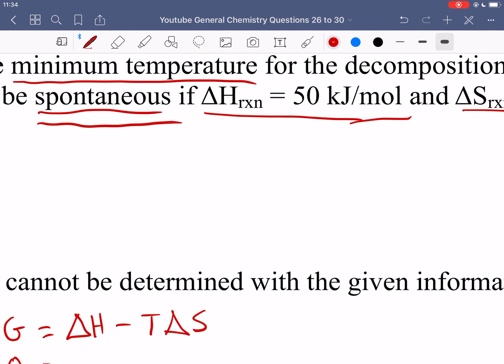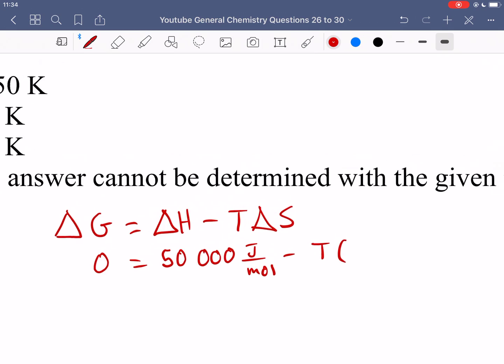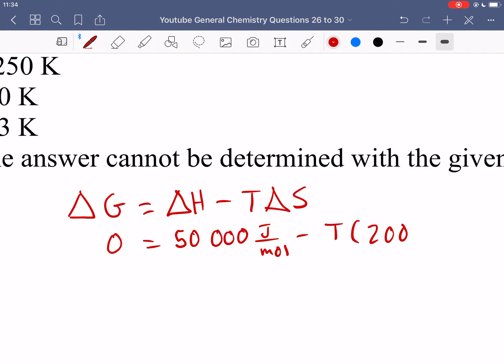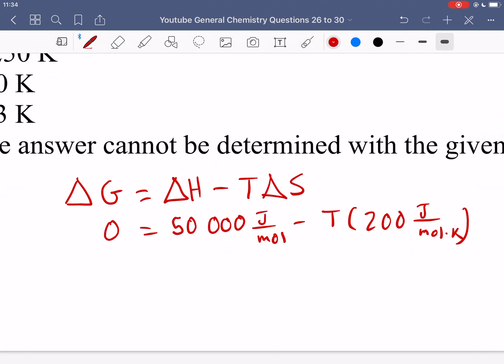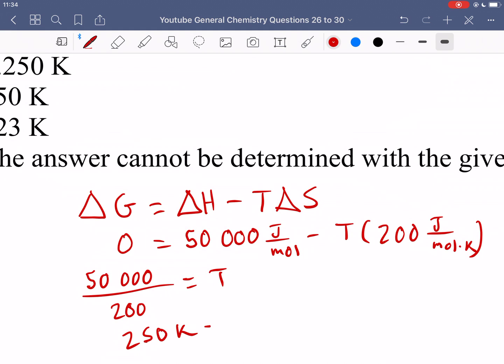Delta H was 50 kilojoules per mole, so that means we have 50,000 joules per mole minus T times 200 joules per mole kelvin. And then we just have to rearrange this and we get 50,000 divided by 200. I'm just going to leave out the units and our answer ends up being 250 Kelvin.